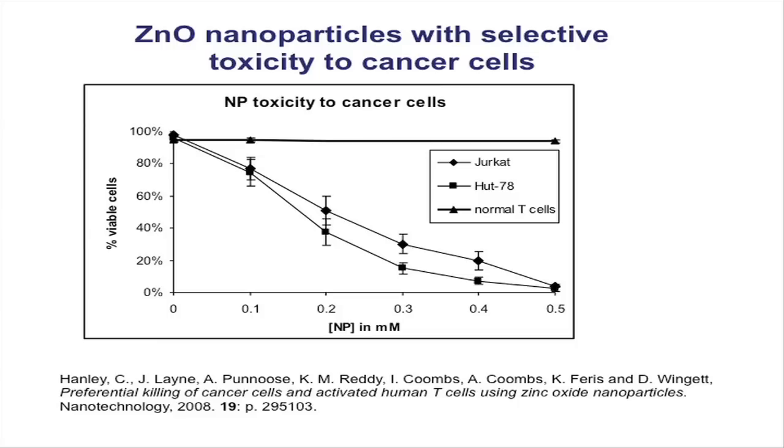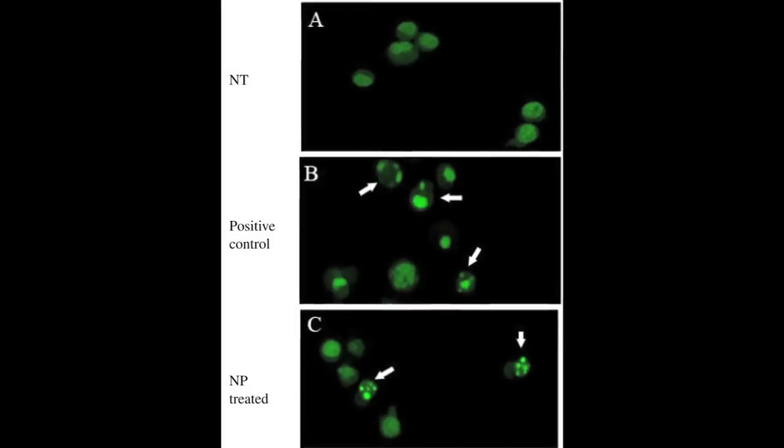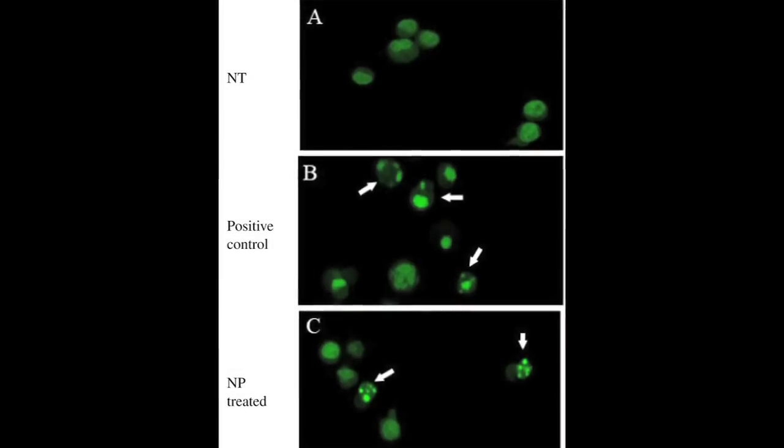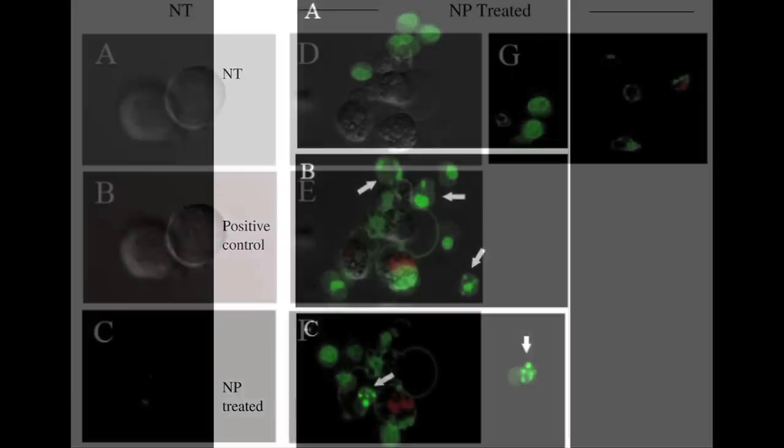completely killed at zinc oxide nanoparticle concentrations of greater than 0.7 millimolar. Interestingly, no measurable effect was observed in resting primary human immune cells even up to about 5 millimolar ranges.